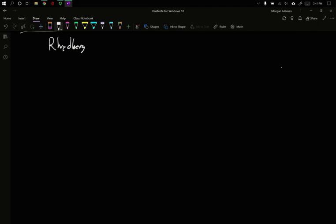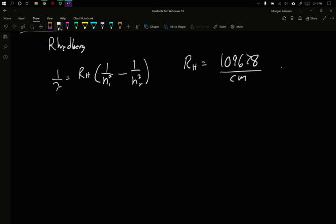In this video, we're going to talk about the Rydberg equation and the Bohr model for helping explain orbitals and what those mean for molecules and atoms. The Rydberg equation is 1 over lambda equals Rydberg's constant, 1 over n1 squared minus 1 over n2 squared. The Rydberg constant is 109,678 per centimeter.